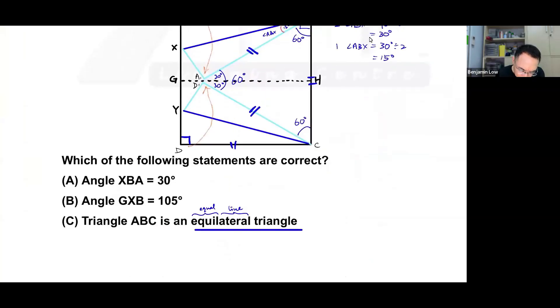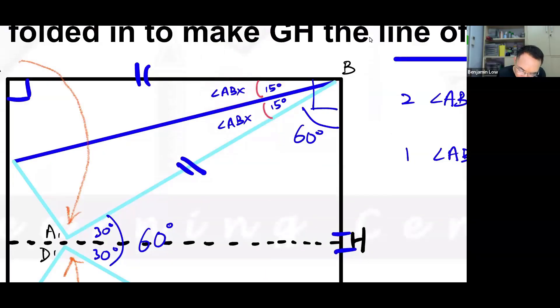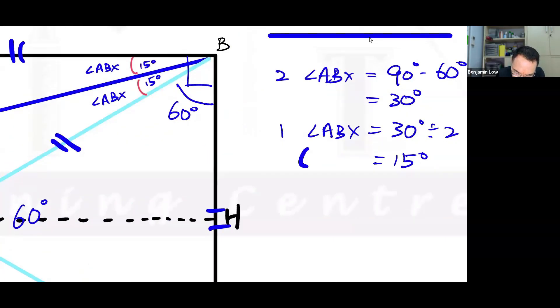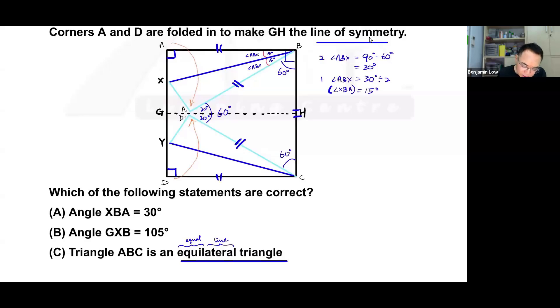So let's answer the first question. First question is angle XBA 30 degrees. Where's XBA? XBA is XBA. So the question is, is this 30 degrees? Okay, again for the younger ones, ABX and XBA are actually the same angles. Okay, you notice that AB is in the middle and X and A are on the two sides. So they're actually the same angle. So the answer is clearly no, because we found that ABX is 15. So XBA is 15 and not 30 degrees. So this is false.